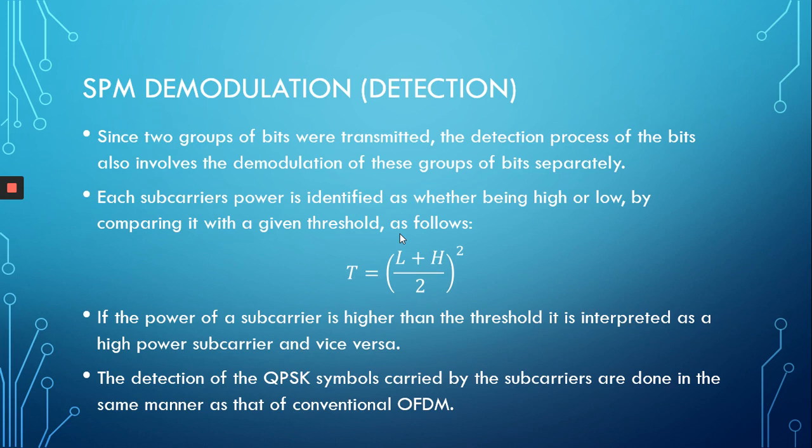If the received subcarrier has a power higher than the threshold, then it's obviously a high-power subcarrier — that's a 1. If the power of the received subcarrier is less than the threshold, then it's a low-power subcarrier, meaning a 0. That's how the power bits are demodulated. As for the bits carried by the QPSK symbol modulation, they're simply demodulated in the same way as in conventional OFDM — by conventional QPSK demodulation.